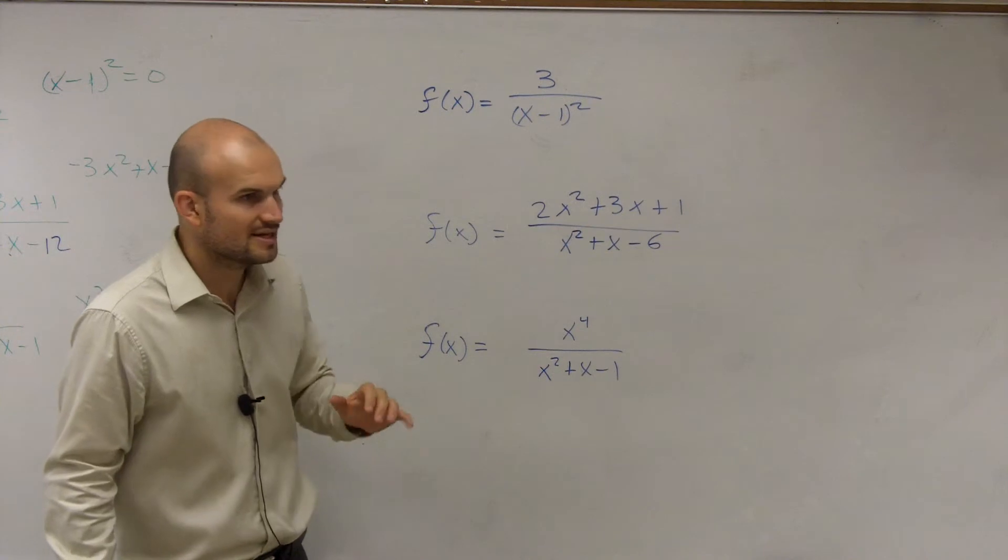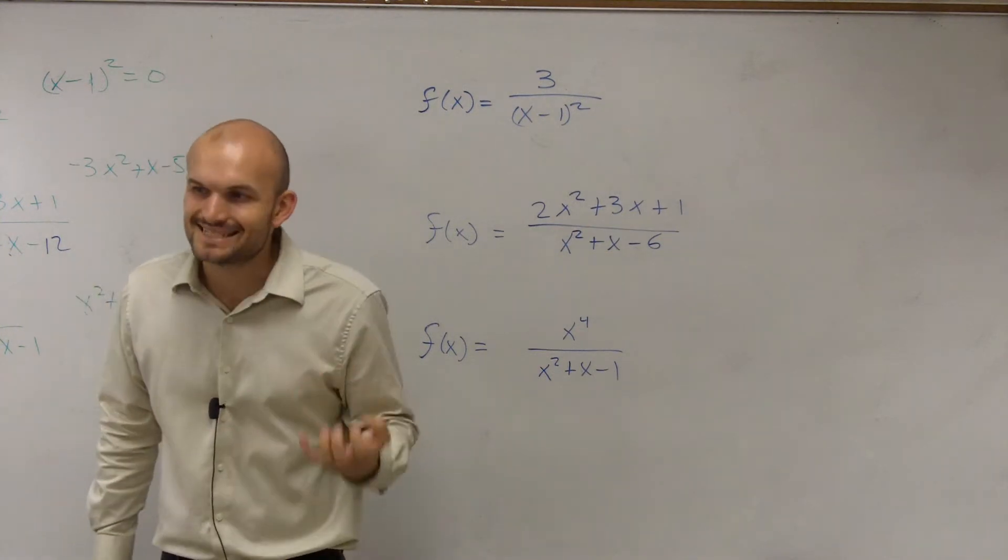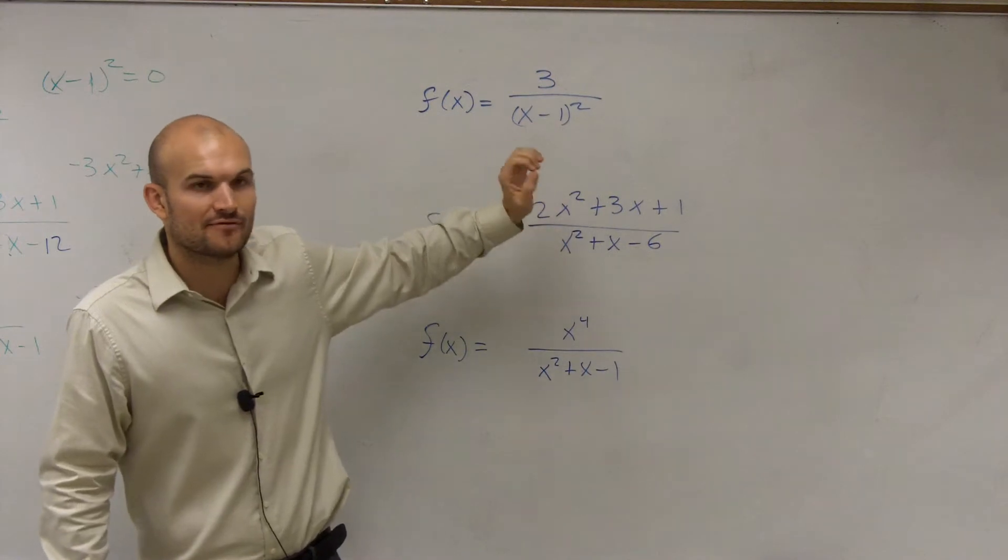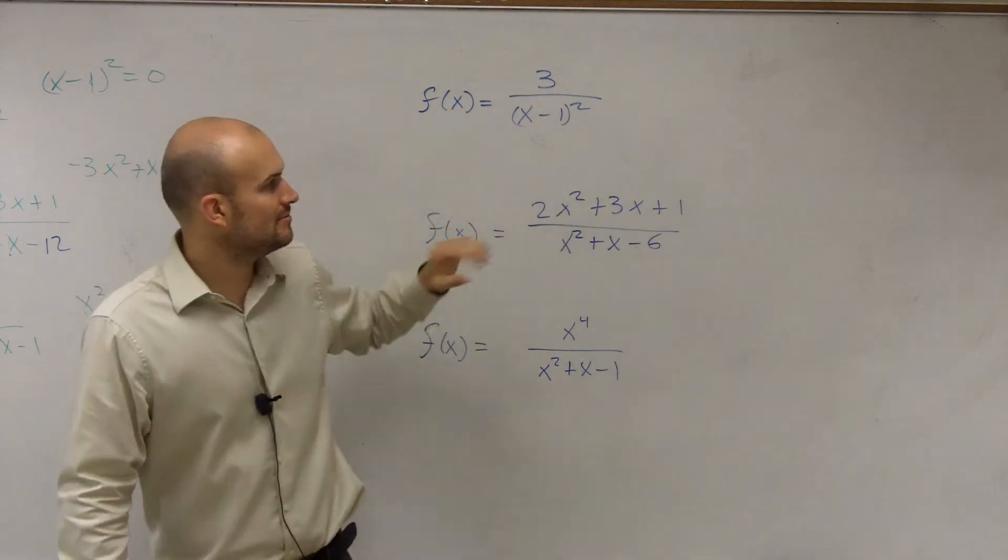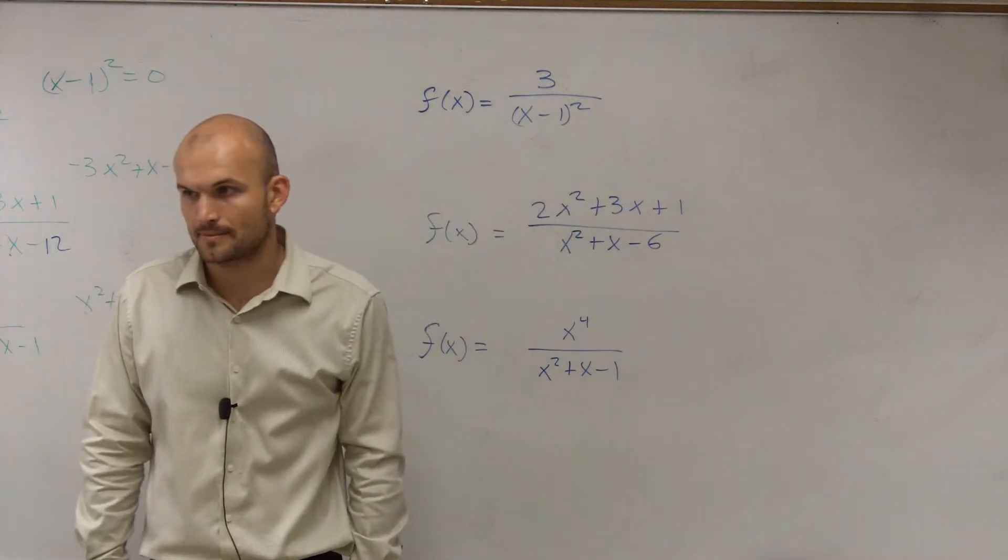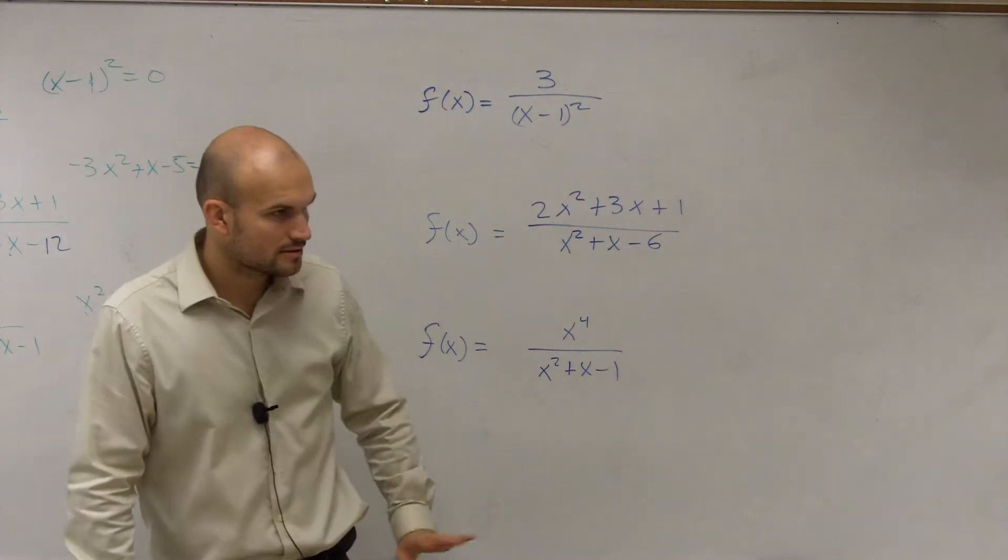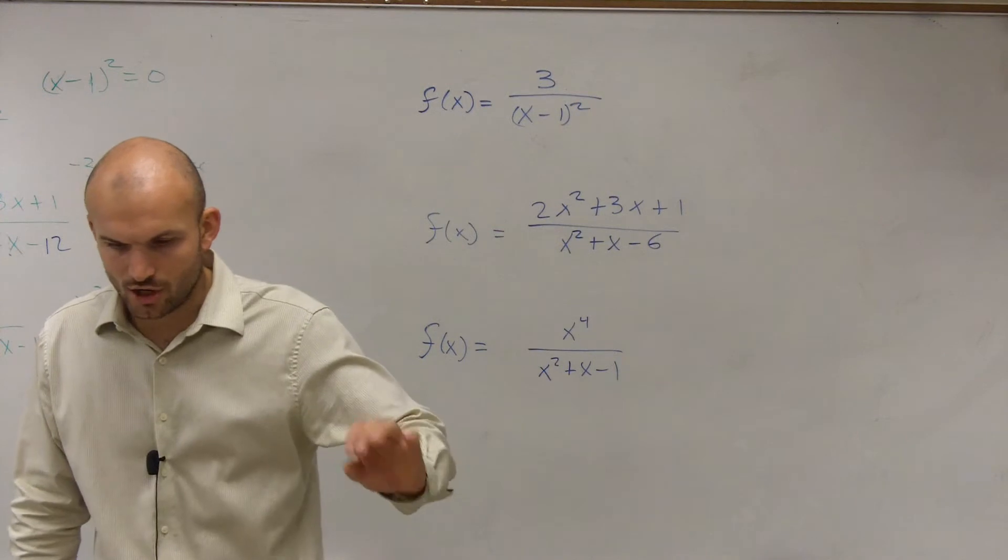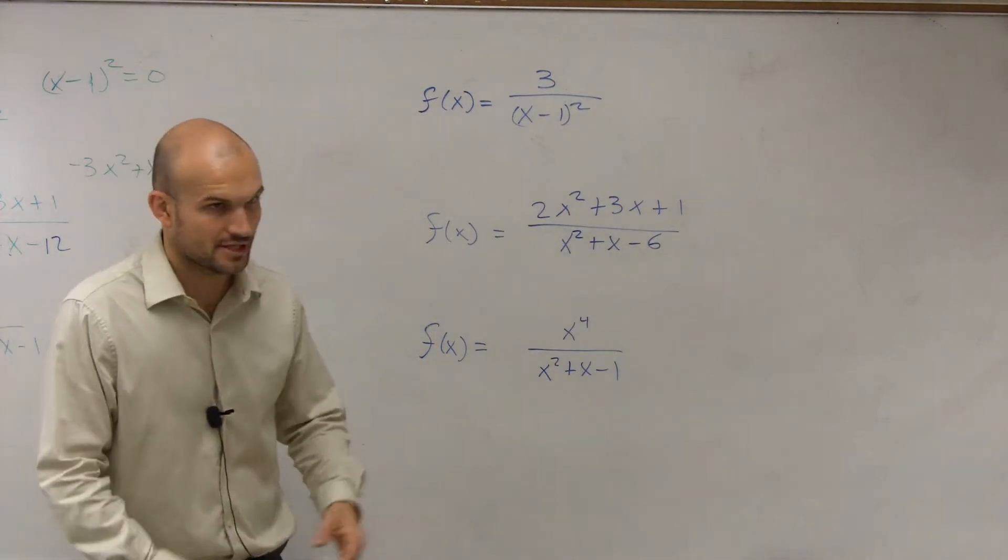The next thing to notice though, it's going to be all real numbers except for the values of x that are going to make your denominator equal to 0. It's going to be all the values that are going to make your denominator equal to 0.